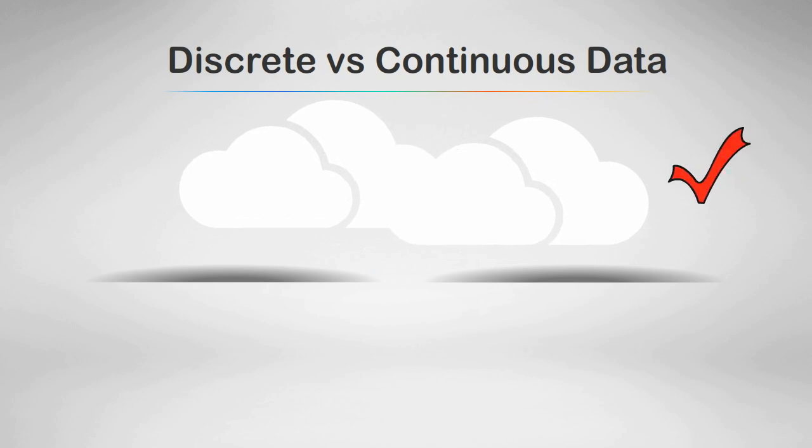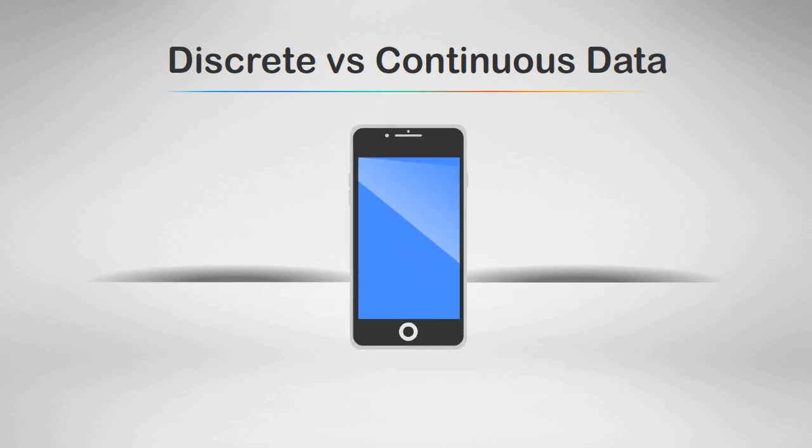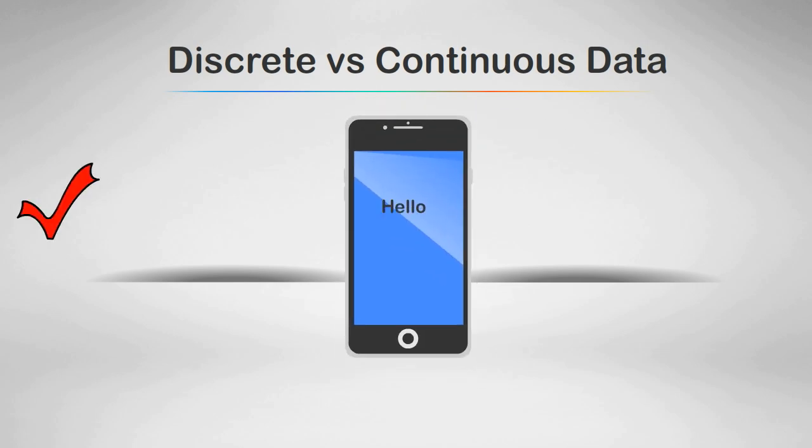The temperature outside. That would be continuous. The number of text messages you sent today. That would be discrete.